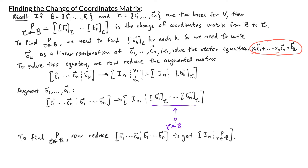The takeaway is: to find the change of coordinates matrix P from B to C, row reduce the augmented matrix [c1 ... cn | b1 ... bn]. Once you row reduce this, you get the identity matrix on the left, and on the right you have your change of coordinates matrix P from B to C. Now let's go through an example.